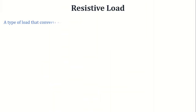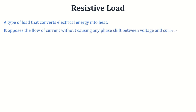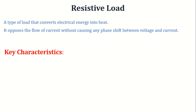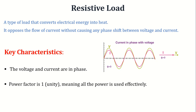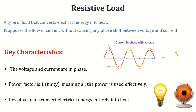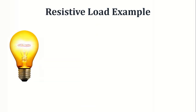First comes the resistive load. A resistive load is a type of load that converts electrical energy into heat. It opposes the flow of current without causing any phase shift between voltage and current. In a resistive load, the voltage and current are in phase, meaning they reach their peak values at the same time. The power factor is unity, indicating that all the power supplied to the load is used effectively without any energy being stored or returned to the source. Resistive loads convert electrical energy entirely into heat, making them simple and efficient for applications like heating and lighting.